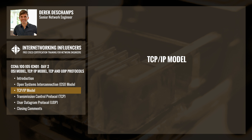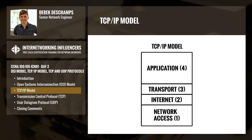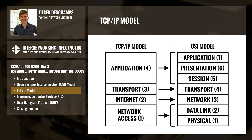The TCP/IP model is the next reference model you should be familiar with for the exam. The TCP/IP model is similar to the OSI model; however, the original TCP/IP model contains only 4 layers. The application layer corresponds to layers 5 through 7 of the OSI model. The transport layer corresponds directly to the transport layer of the OSI model. The internet layer is the same as the network layer of the OSI model. The network access layer covers both the data link and physical layers of the OSI model.